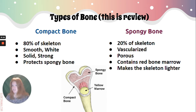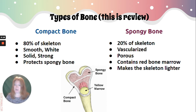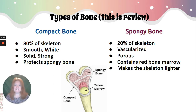So, types of bone — this is a review. Compact bone is about 80% of our skeleton. It's smooth, white, solid, and strong, but it protects the all-important spongy bone inside.